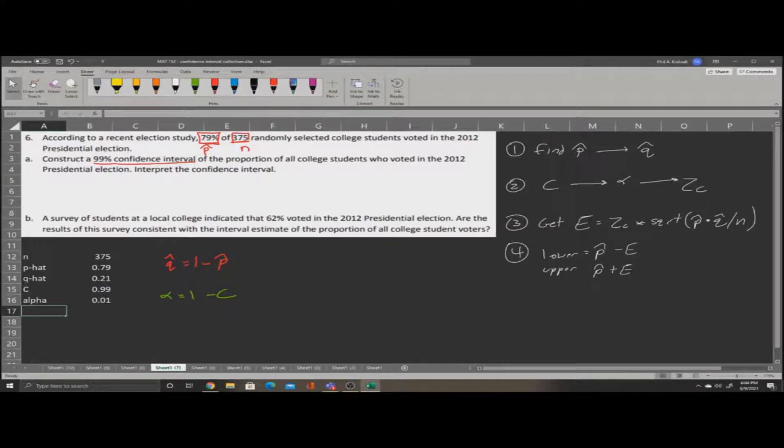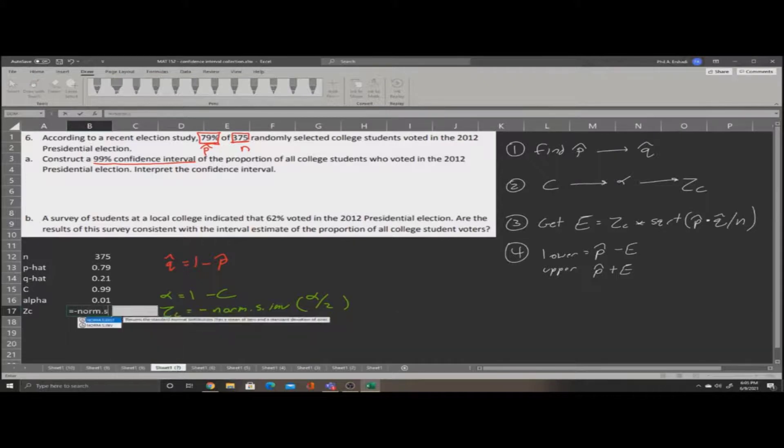Then we can find our z-critical. Our z-critical will be negative norm s inverse. And we'll take that of alpha divided by 2. So we'll say equals negative norm s inverse. Click the alpha and divide it by 2, and press enter. This will give us our z-critical.